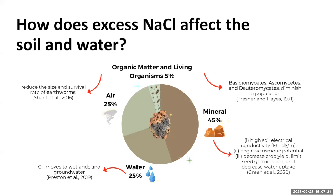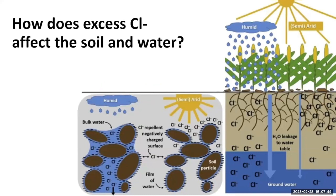What happens with the chloride? It goes basically to wetlands and groundwater because chloride has a negative charge and the soil also has a negative charge — and when you have two negative charges, you will see repulsion between them. Here in North Dakota, we have a semi-arid climate, so the chloride movement is not a lot. We don't have enough water to move the chloride to the groundwater, so the chloride stays in the soil and affects the crops.